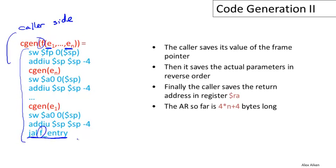When we execute the jump-and-link instruction, it saves the return address — the address of the next instruction after the jump-and-link — in register RA. Note also that the activation record built so far is 4*(n+1) bytes: four bytes per argument and four bytes for the old frame pointer, where n is the number of arguments.